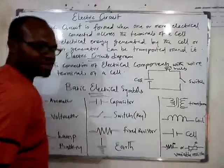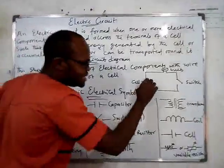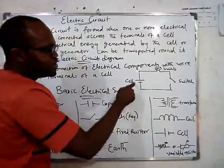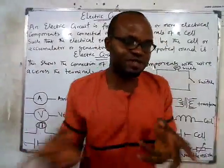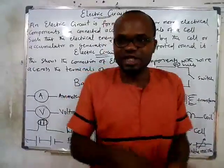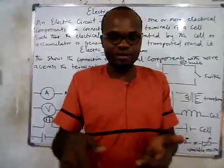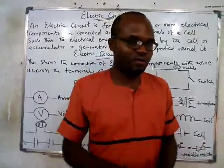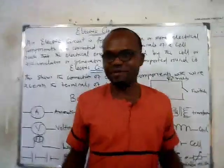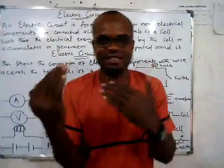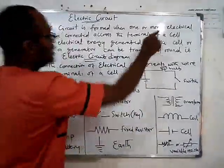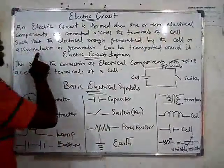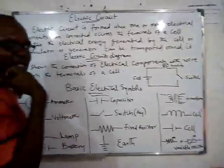The electrical energy is generated by the cell. If asked which of the following is not a source of charges for electricity — and you are given cell, generator, accumulator, battery, and telephone — the answer would be telephone, because a telephone is not a source of charge. So the things that can replace a cell to supply charges include an accumulator or a generator.